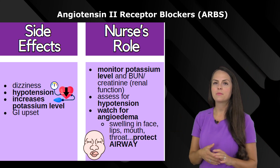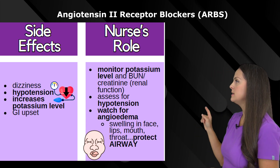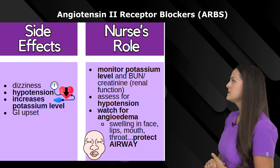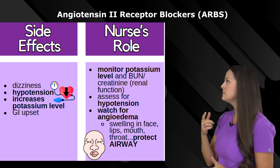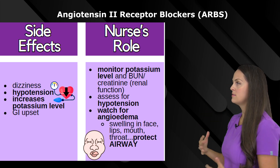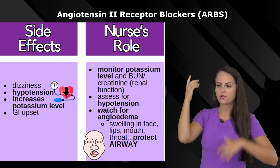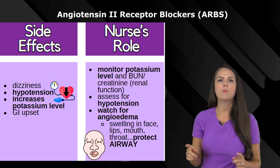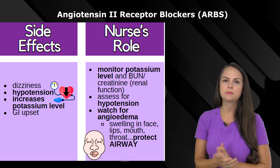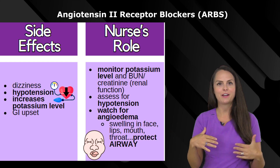One thing that can happen with this class — which is rare, but possible — is called angioedema. This is where you get swelling in the face, lips, mouth, and throat. If swelling occurs in that area of the body, we need to protect the airway because it can cut off airflow.